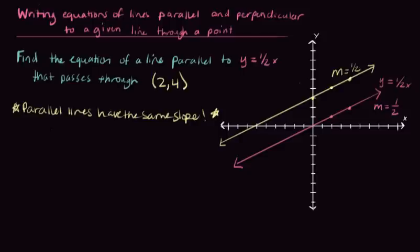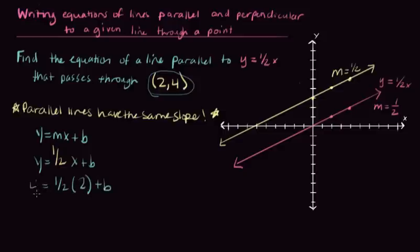Now, if we want to write the equation of the line, we need to go back to our y equals mx plus b form. And we know that m is 1 half. So we can write y equals 1 half x plus b. Now, we can use these points for x and y to find b. So put in 2 for x and put in 4 for y because this is x and this is y.